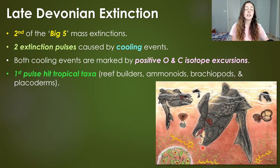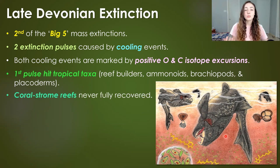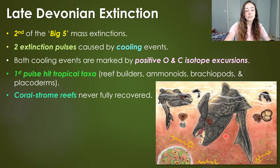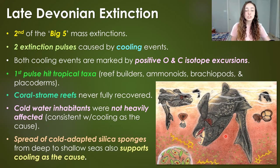The first cooling event devastated tropical taxa like reef builders, ammonoids, brachiopods, and placoderm fish. Coral-stromatoporoid reefs — the reef-building corals and stromatoporoids that dominated reef communities during this time — never fully recovered. Cold-water adapted species, however, weren't heavily affected, which is consistent with cooling as the cause. Moreover, the spread of cold-adapted silica sponges into shallower environments also provides support for cooling.